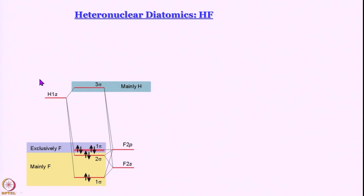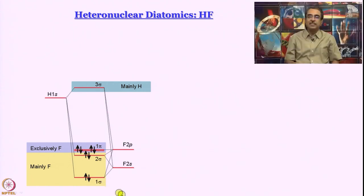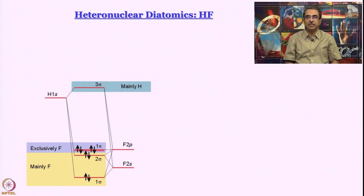That is because you have so many more protons in the nucleus that electrons are drawn in, and the energy gets lower and lower as you go higher up the atomic number ladder. For fluorine, you do not even consider the inner 1s orbital — they are non-bonding, meaning they do not participate in linear combination.